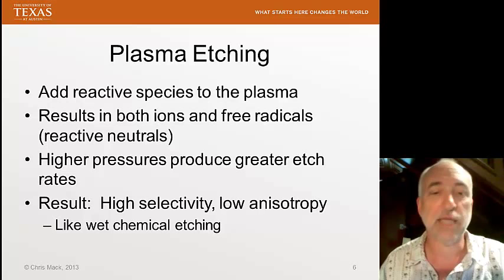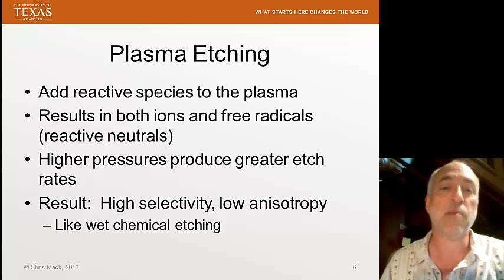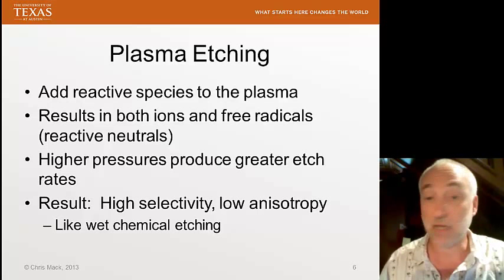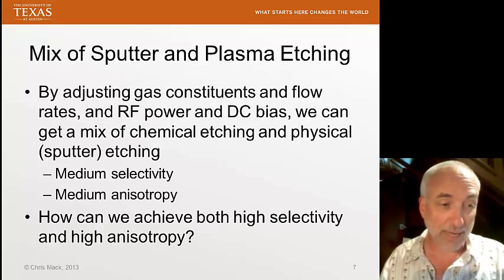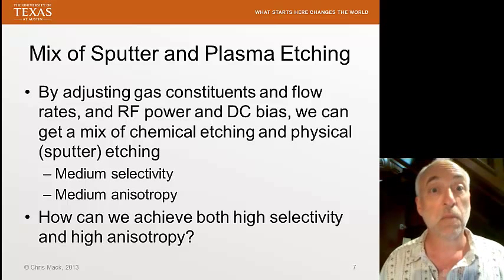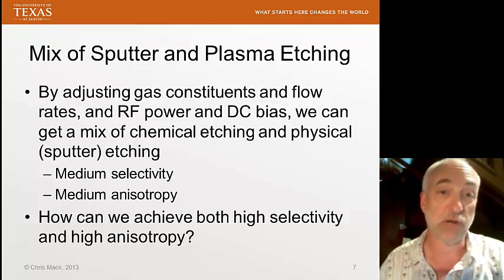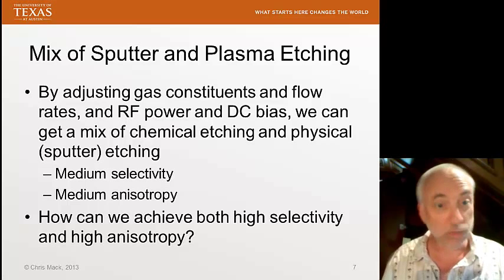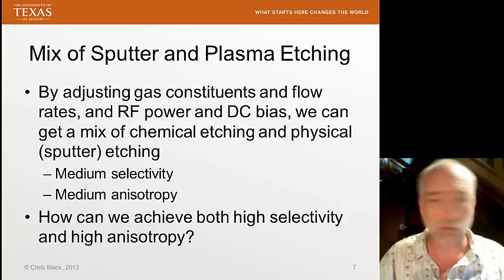By adjusting pressures, energies, and DC biases, we can eliminate the sputtering component and have purely chemical etching — giving high selectivity but anisotropy near zero. So now we have two extremes: sputter etching with anisotropy of one and selectivity of one, or plasma etching with anisotropy of zero but very high selectivity. We can mix these modes by adjusting gas constituents, flow rates, pressure, RF power, and DC bias to get a trade-off — higher selectivity with lower anisotropy, or higher anisotropy with lower selectivity.